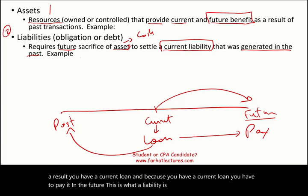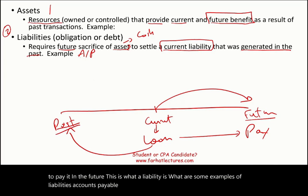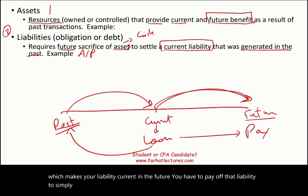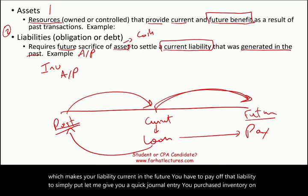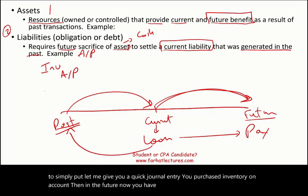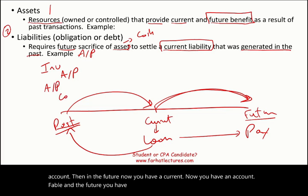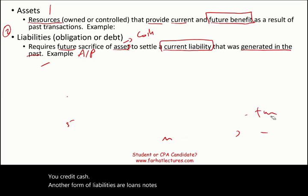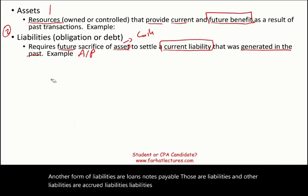Examples of liabilities include accounts payable. In the past you purchased something on account, making the liability current, and in the future you have to pay it off — debit accounts payable, credit cash. Another form of liabilities are loans and notes payable. Other liabilities are accrued liabilities, which are liabilities for expenses that are incurred but not yet paid. All liabilities fit this definition.